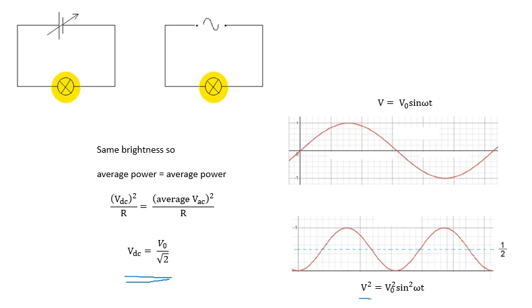The average value of sin²(ωt) is a half, and then we square root it again and we get our equation here. For sinusoidal AC, V_DC, the equivalent DC value, is V_0 over root 2. To be honest, I wouldn't worry too much about that, just remember the equation at the end.